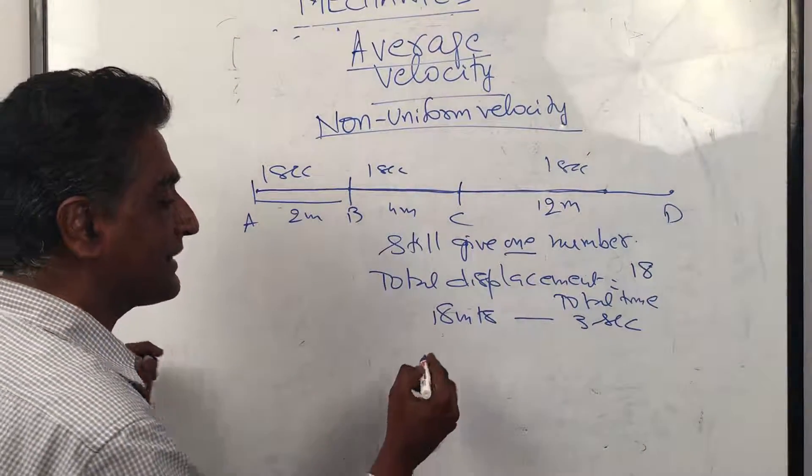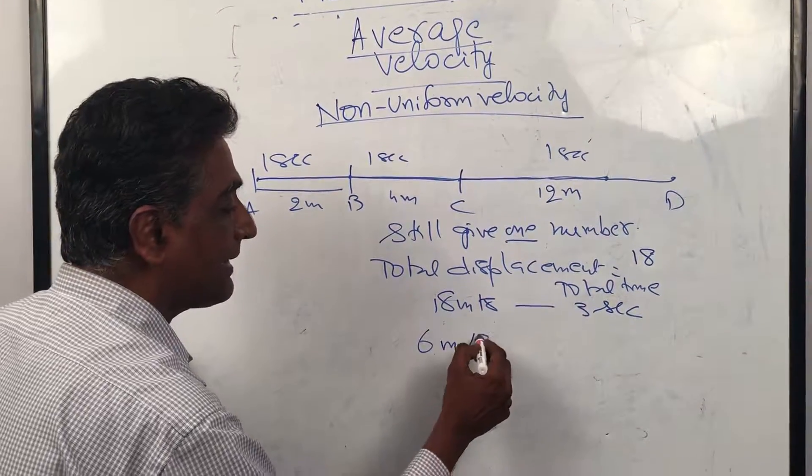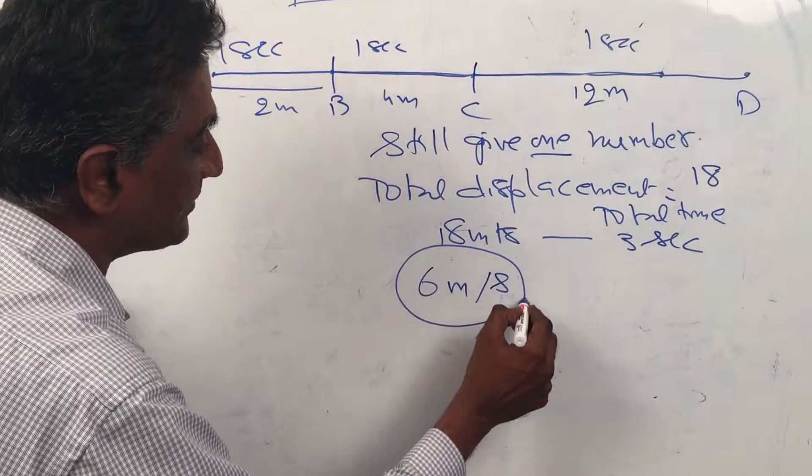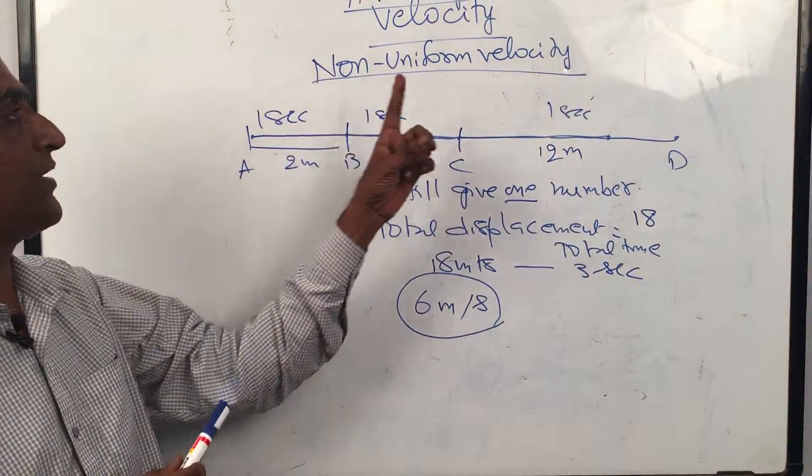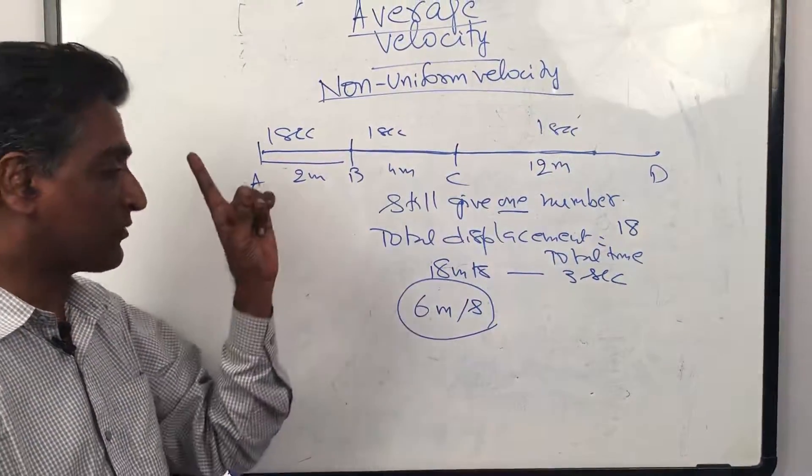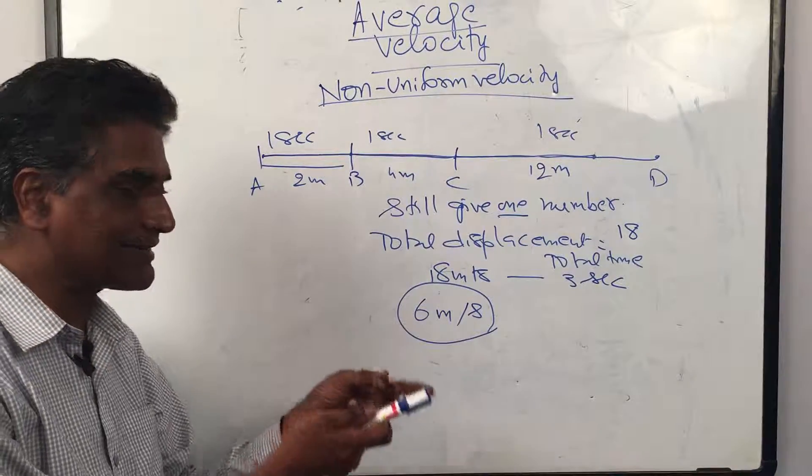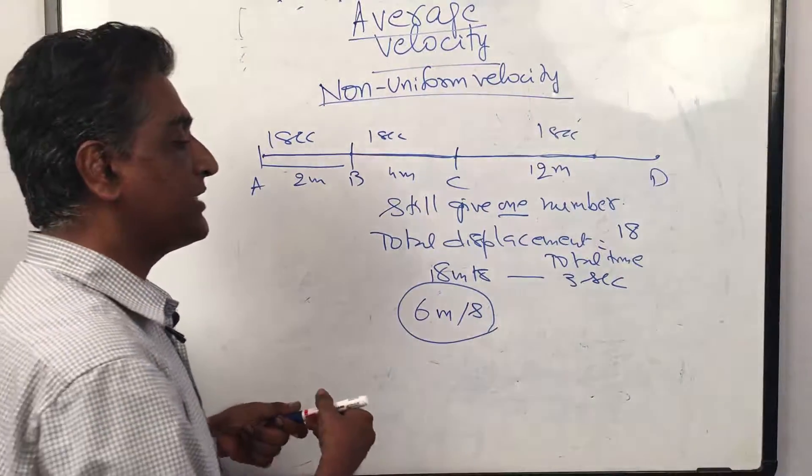Though he didn't actually go at 6 meters per second, he averagely went 6 meters per second. Definitely we can say that. So even for non-uniform velocity we can get one number: total displacement by total time.